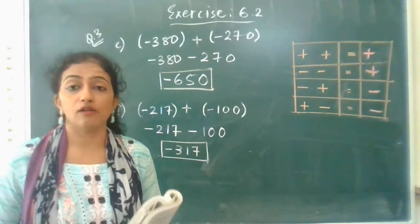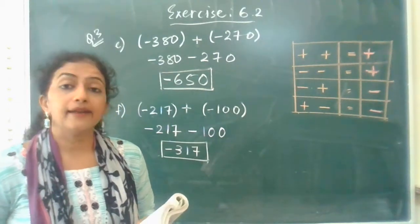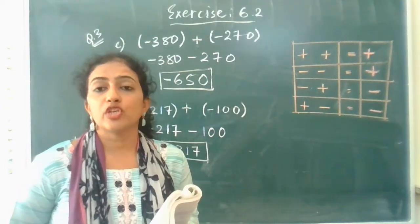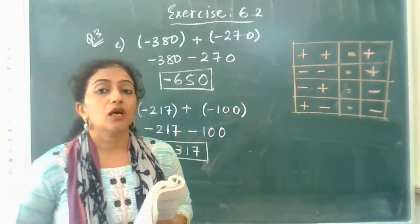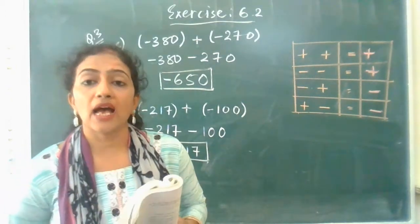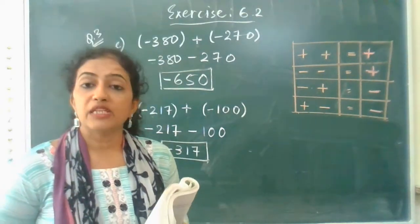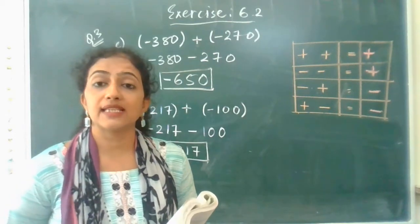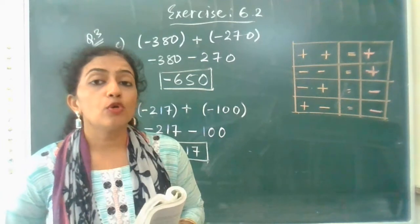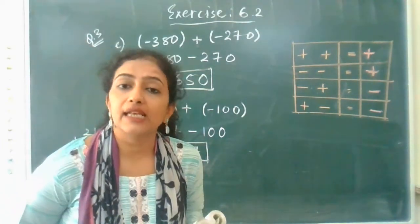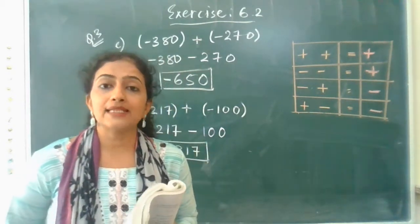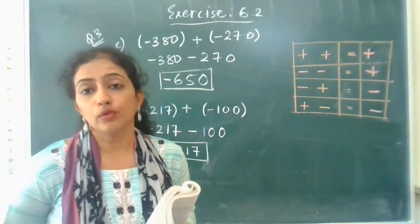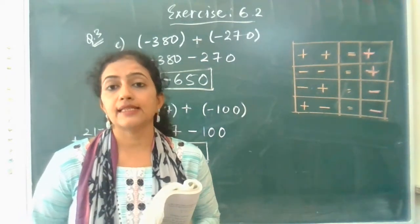Now let's move to question 4. Question 4 says: find the sum. Sum means you have to do the addition. Here the integers are given without an operating sign, but the word 'sum' tells us we have to do addition, so between all the numbers we have to put a plus sign. A common mistake students make is starting to solve the sum without putting an operating sign. Please follow the rules. So let's start question 4 of exercise 6.2.